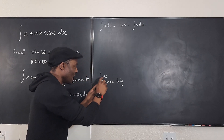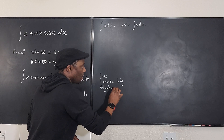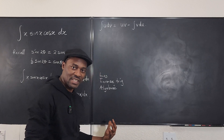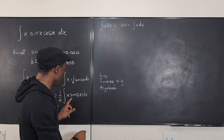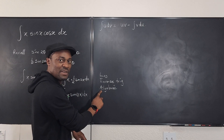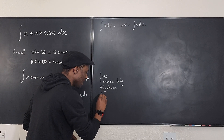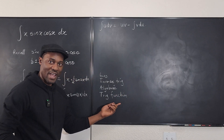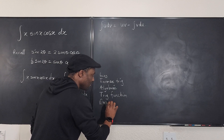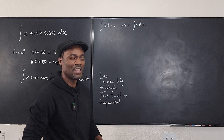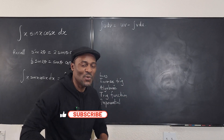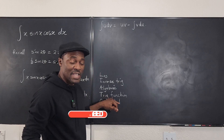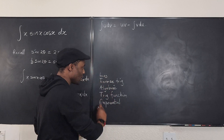LIATE means: always choose to differentiate Logarithmic functions first; if none appear, look for Inverse trig functions next; then Algebraic expressions — things that contain x, x², etc. — which are easy to differentiate but rank third. Sine 2x is a Trig function, which comes after algebraic. Finally, Exponential functions like e^x or 2^(2x−1) are the last thing you'd want to differentiate. We'll use the integration by parts formula: ∫u dv = uv − ∫v du.